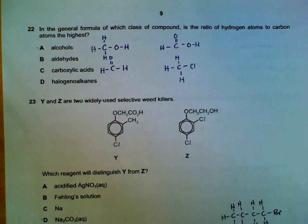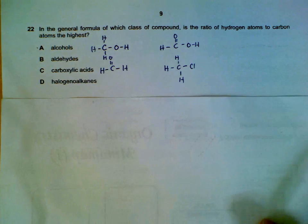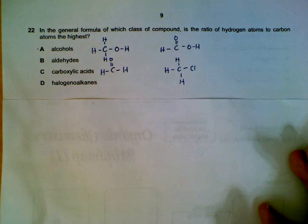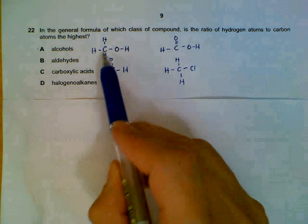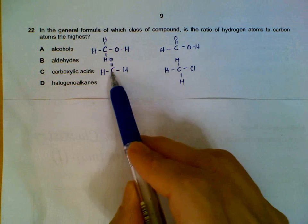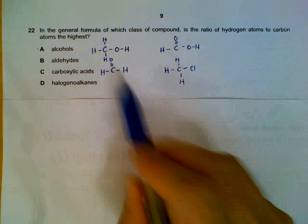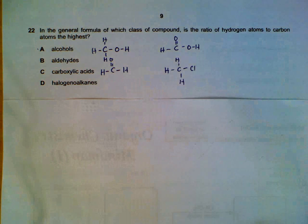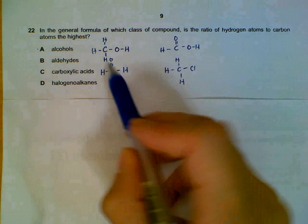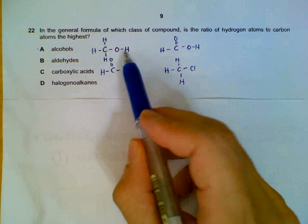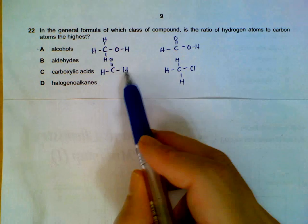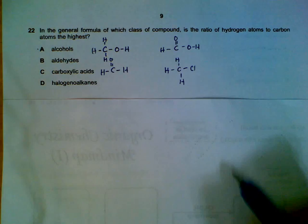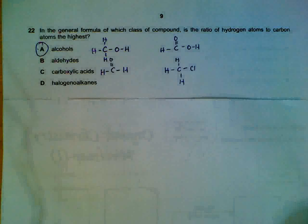Question 22. Which one is the ratio of hydrogen to carbon the highest? You can do your general formula and all that, but you can save yourself the trouble by listing out specific examples. Using one carbon as a basis, I have my alcohol, one carbon aldehyde, carboxylic acid and haloalkanes. And then I see that for my alcohols, I have four hydrogen, which is the most among all of them. So the ratio of hydrogen atoms to carbon is the highest for alcohol.